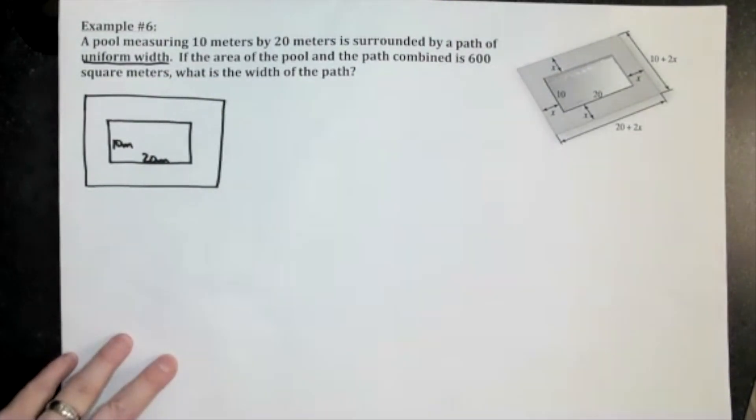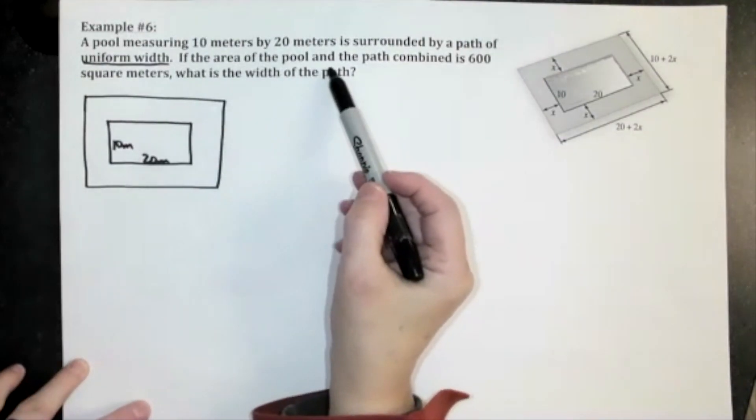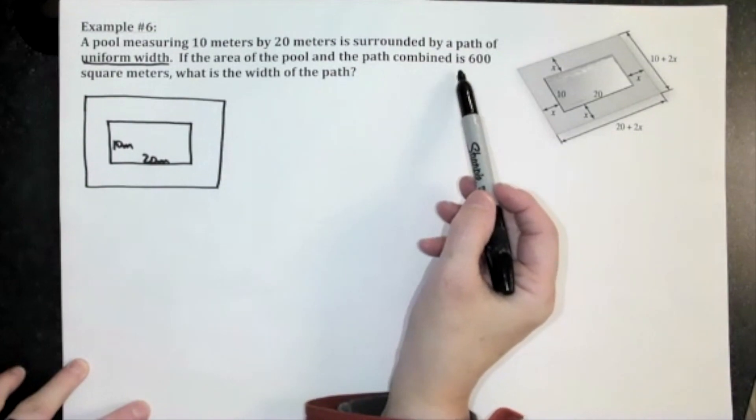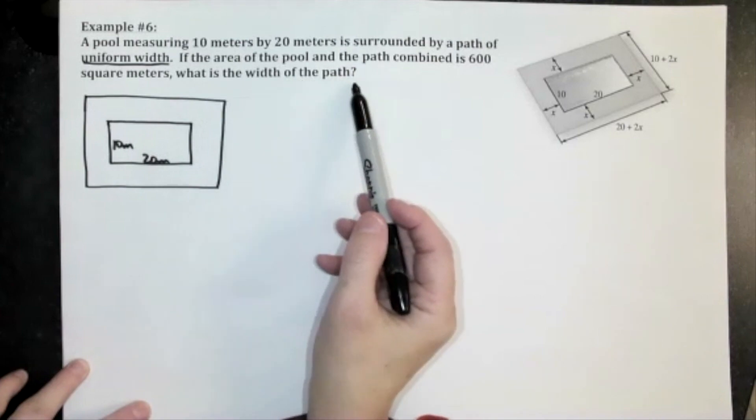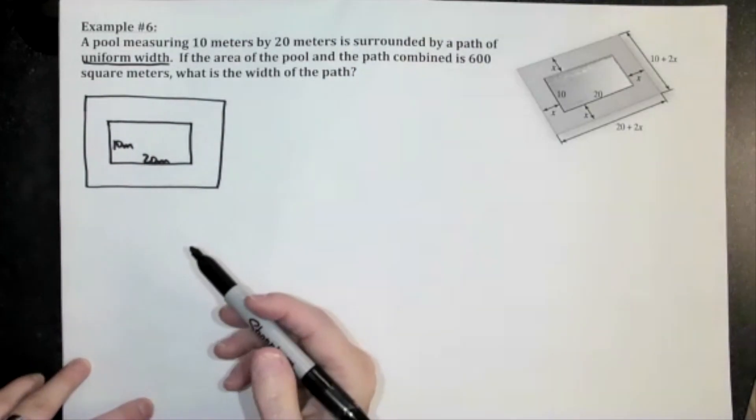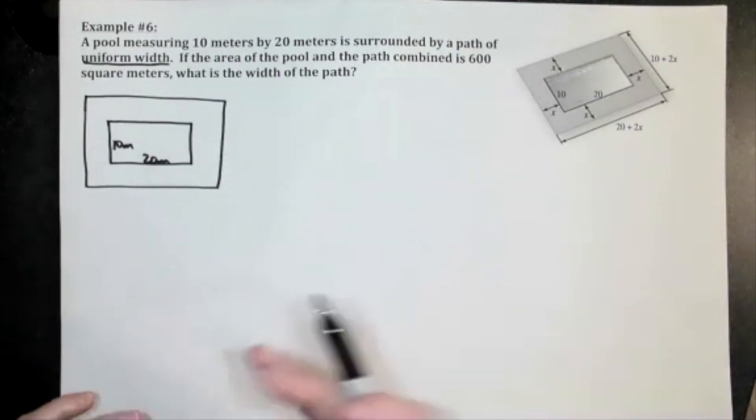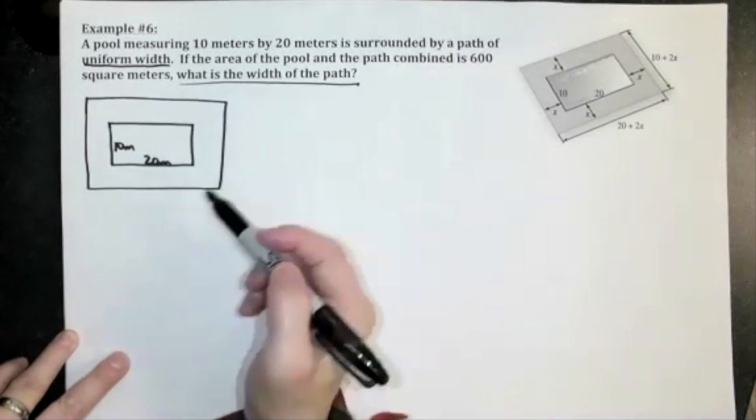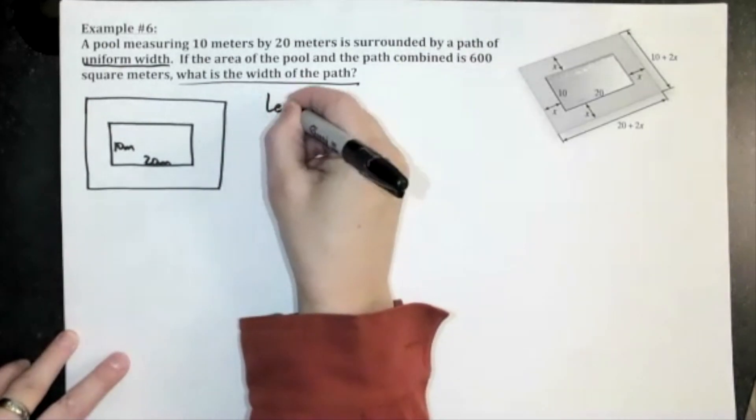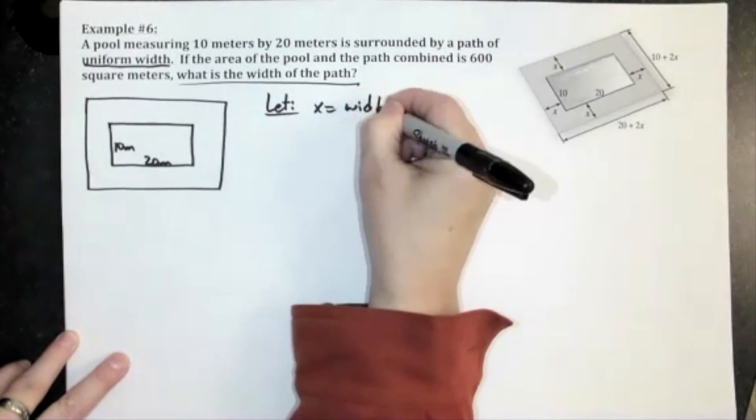So you would draw that from the very first sentence. Now if I keep reading, if the area of the pool and the path combined is 600 square meters, what is the width of the path? Most of the time the question is always going to be what you're going to define x as being. What is the width of the path? I'm going to let x equal the width of the path so that I can continue to label my diagram.